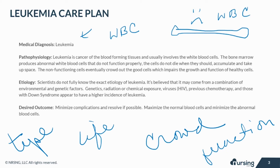Scientists don't fully know the exact etiology of the disease. It's believed that it may come from a combination of environmental and genetic factors. Genetics, radiation or chemical exposure, viruses like HIV, previous chemotherapy, and those with Down syndrome appear to have a higher incidence of leukemia.